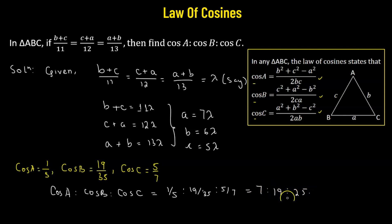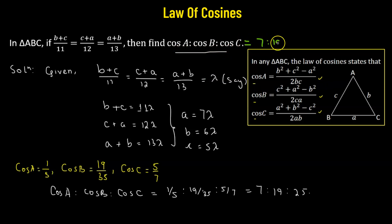So this is the value of the ratio of cosine A to cosine B to cosine C. We are finally getting the answer as 7 is to 19 is to 25.